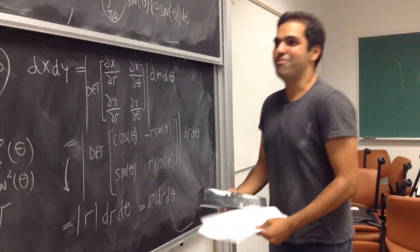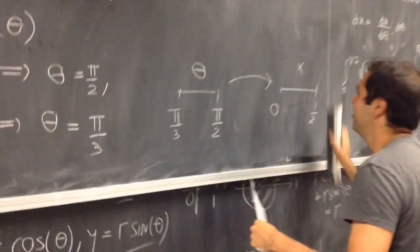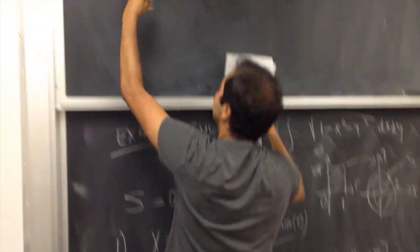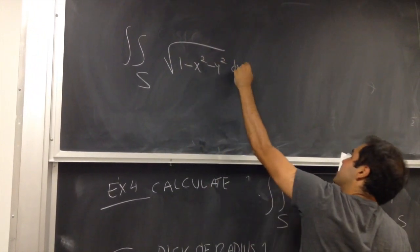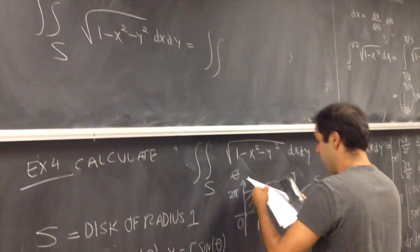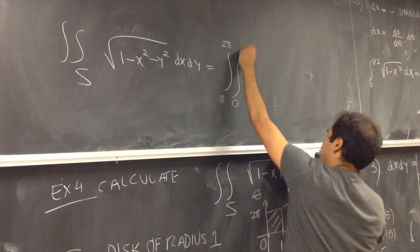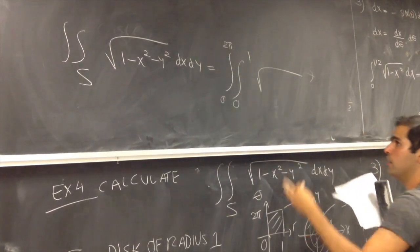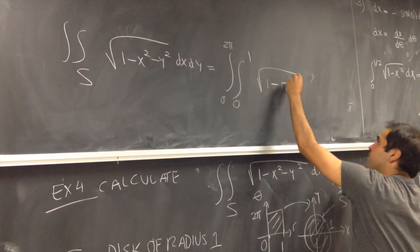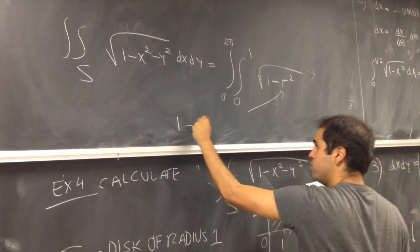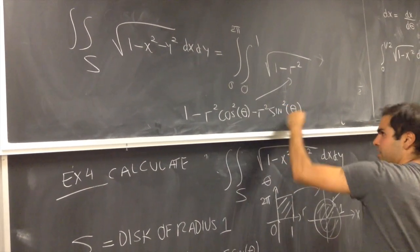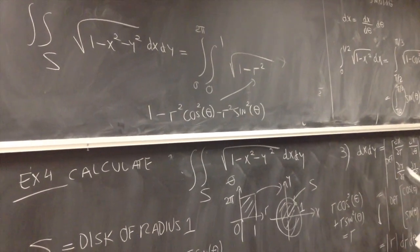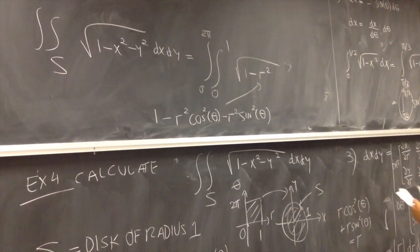Now comes the fun part. The double integral over S of sqrt(1 − x² − y²) dx dy becomes the integral from 0 to 2π, integral from 0 to 1, of sqrt(1 − r² cos²θ − r² sin²θ), which simplifies to sqrt(1 − r²), times the Jacobian r dr dθ.